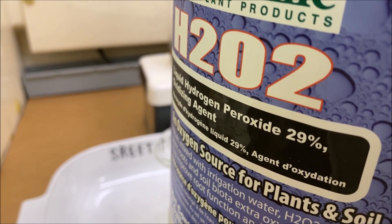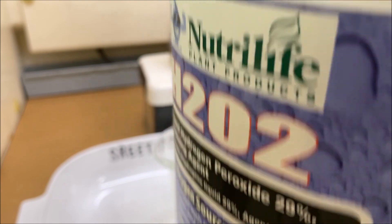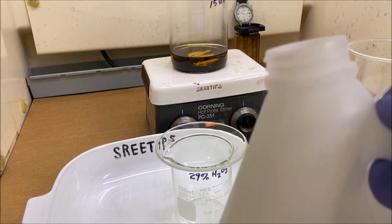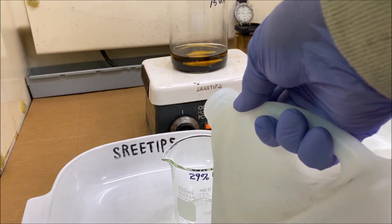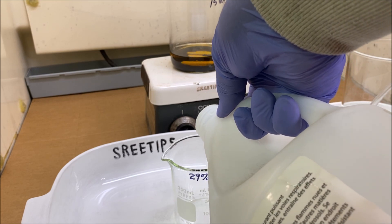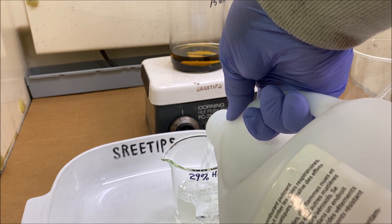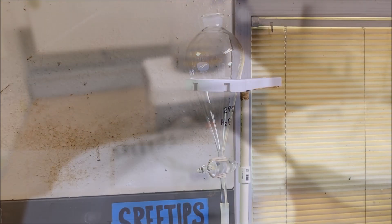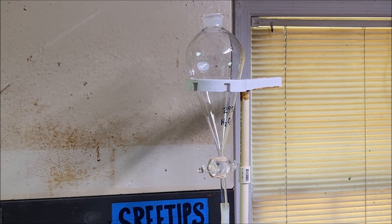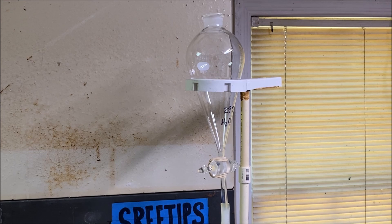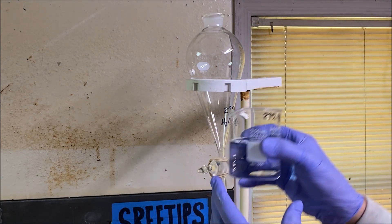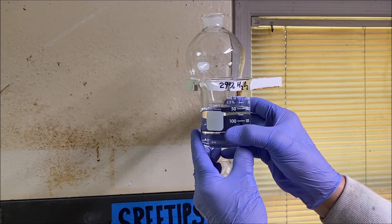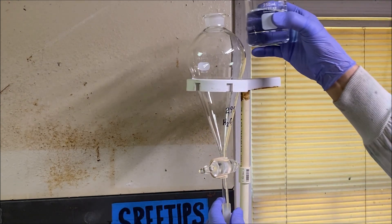For the next step, what we're going to do is measure out some 29% hydrogen peroxide. I'm going to go with about maybe 200 milliliters. I've got my delivery apparatus set up outside the fume hood. I'm going to add the hydrogen peroxide to this funnel.